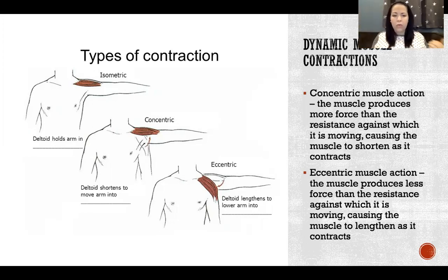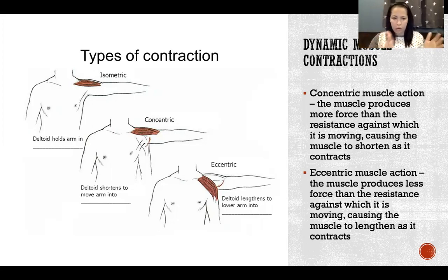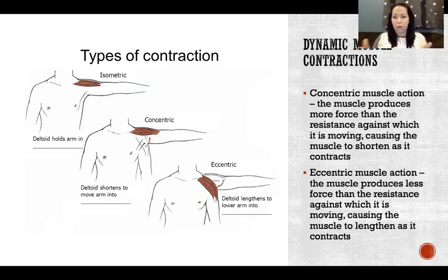When a muscle stays the same length or gets longer while contracting, it means that some sarcomeres are shortening while others are lengthening, allowing the whole muscle to stay the same length — or even to lengthen, as in an eccentric muscle contraction.